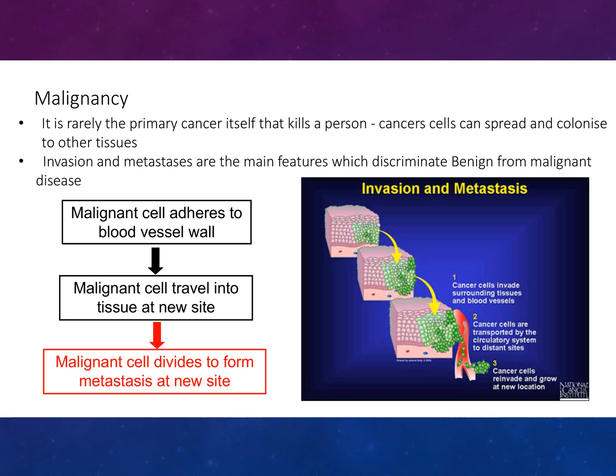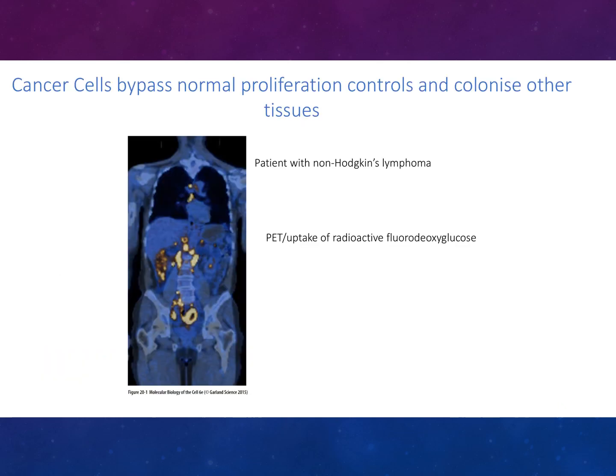Malignant cells adhere to the blood vessel wall, travel into tissue at new sites, and divide to form metastasis at a new site. Cancer cells can bypass normal proliferation controls and colonise other tissues, as seen for example in a patient with non-Hodgkin's lymphoma.